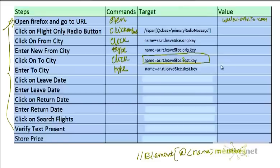For the city name in the 'From City' field, let's say Los Angeles. And for the 'To City', I should enter Dallas Fort Worth — one city each.